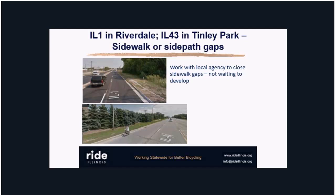When you see what we call a 'goat path' or desire line — a worn dirt path alongside the road because so many people are walking or biking where there's no sidewalk or side path — that's a clear indication the road agency failed by not adding something off-road.